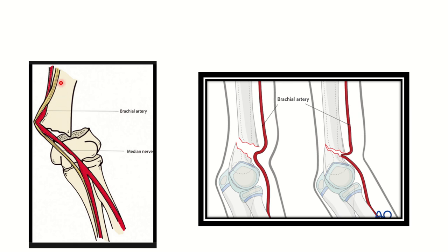One artery and one nerve pass close to this region. We can see there is a nerve — this nerve is the median nerve — and an artery, which is the brachial artery. In the second picture, we can see the brachial artery is compressed by the two fracture fragments. This compression of the blood supply causes weakness of the radial pulse.